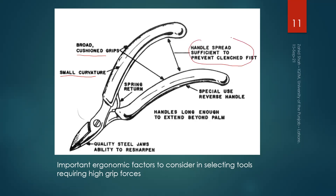The space between the handles should be sufficient to prevent a clenched fist. There is a special-use reverse handle using a spring for returning it back to the open position after use. The handle should be long enough to extend beyond the palm, so anthropometry should also be considered.